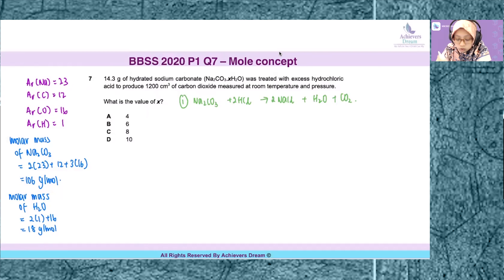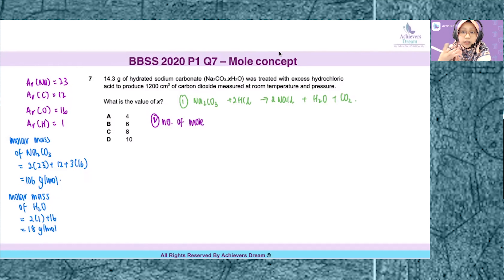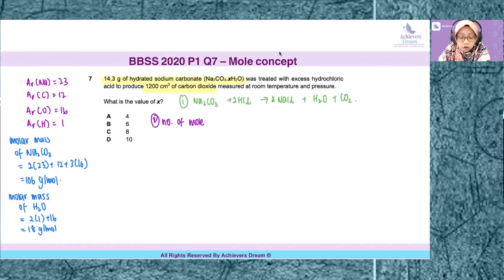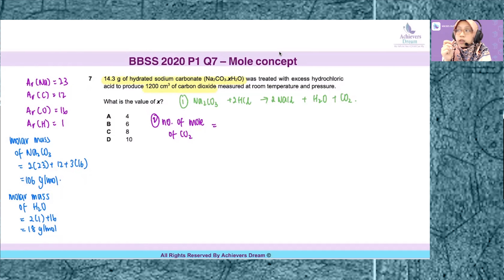The second step is to find the number of moles of a substance that you are given information to work with. In this question, you are given the mass of hydrated sodium carbonate and the volume of carbon dioxide gas. Do you find the number of moles of hydrated sodium carbonate or number of moles of carbon dioxide gas? The answer is to find number of moles of CO2.